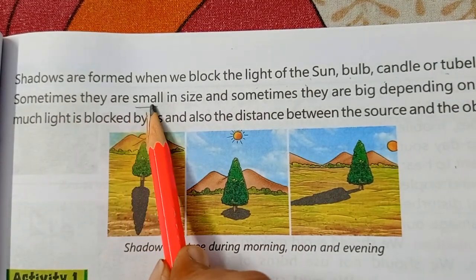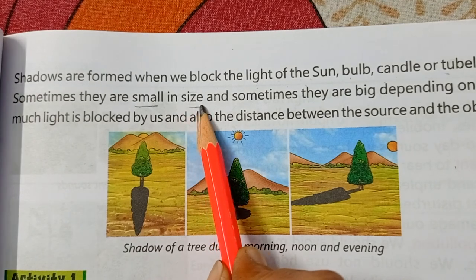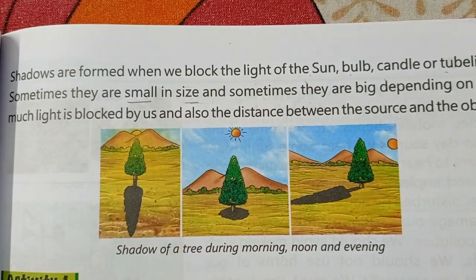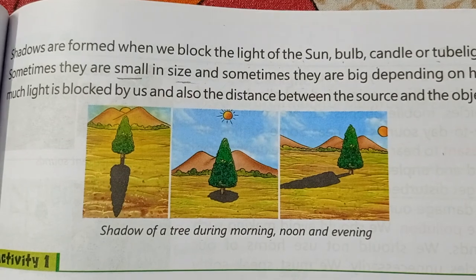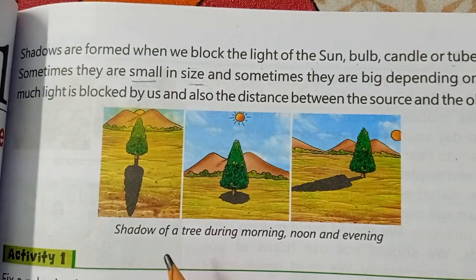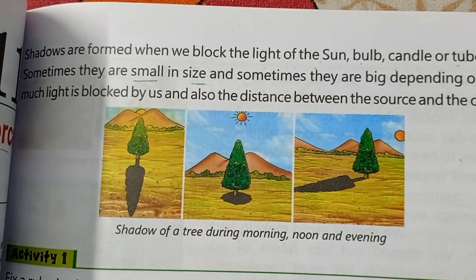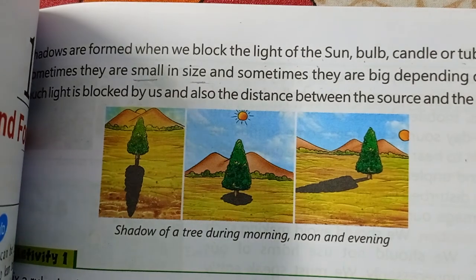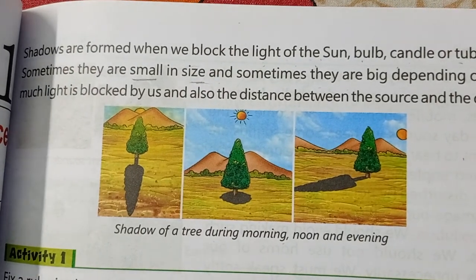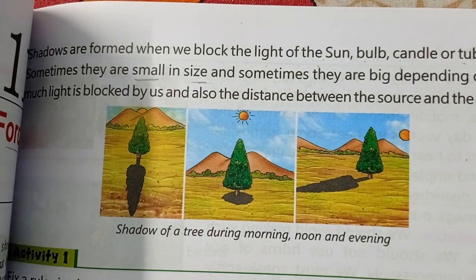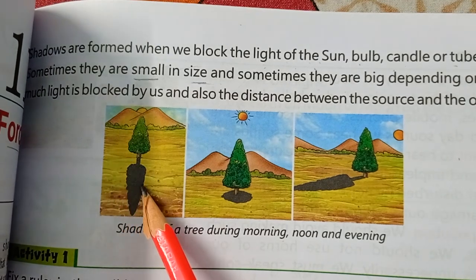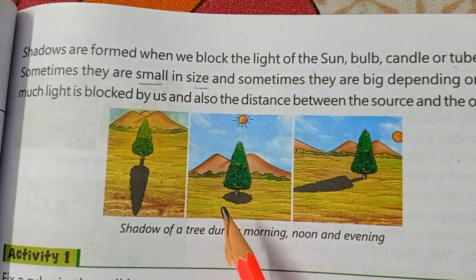Sometimes shadows are small, sometimes they are big in size, depending on how much light is blocked. Now look at this book — the book is blocking the light, and you can see the shadow forming here, going further. This is our shadow forming.